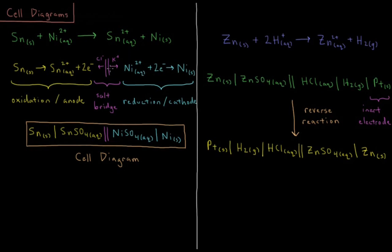In the middle of our diagram, we have a double bar which represents the salt bridge, where we complete the circuit of the wire flowing from the anode to the cathode, delivering electrons over here.